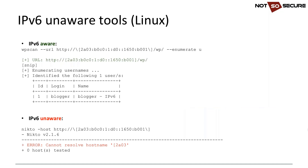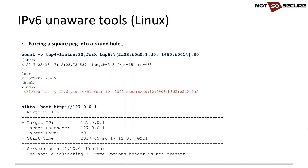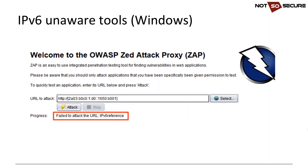We identified a WordPress installation on IPv6, so we use WPScan, feeding it the IPv6 URL — WPScan is IPv6 aware and works nicely. If we try an IPv6-unaware tool like Nikto with the IPv6 address, we get 'cannot resolve hostname' errors. We can work around this with SOCAT: set it to listen on local IPv4 port 80 and forward to the IPv6 address, then point Nikto at localhost and it works seamlessly.